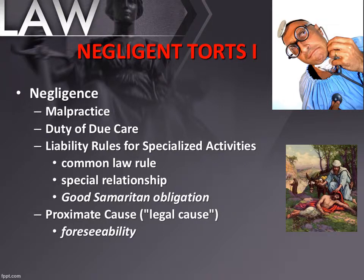When measuring proximate cause with the but-for test, you also consider foreseeability — were my actions foreseeable? By placing grease at the bottom of a ladder, injury was more likely, and that is foreseeable. If A causes B which causes C, and the A-to-C relationship is foreseeable, you are the proximate cause, or legal cause. In contrast, if I simply walk up and shove you off the ladder, that is actual cause — I directly caused your harm.